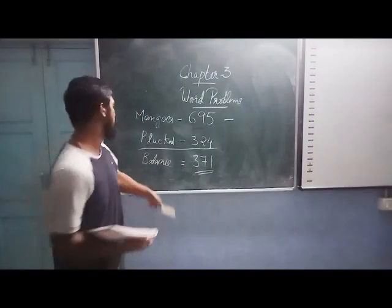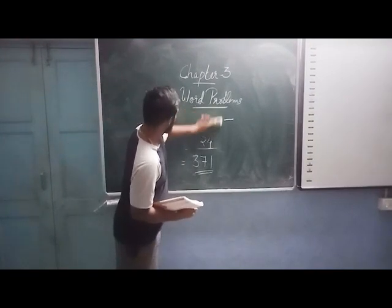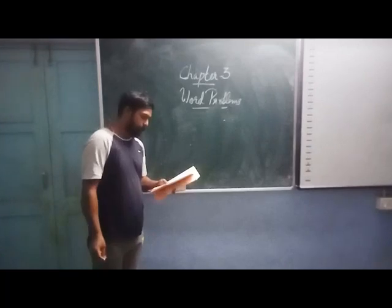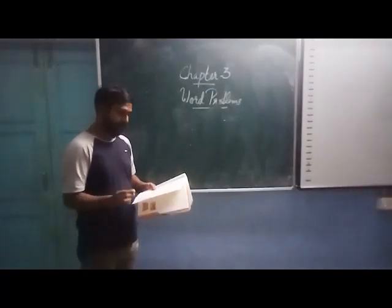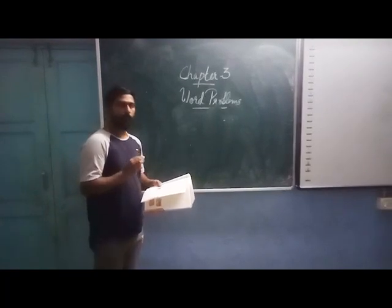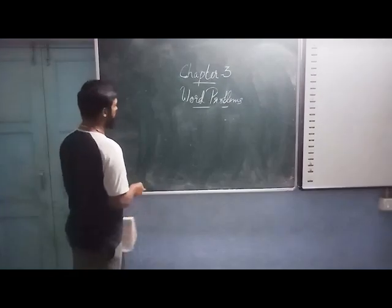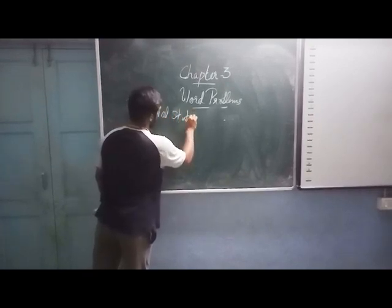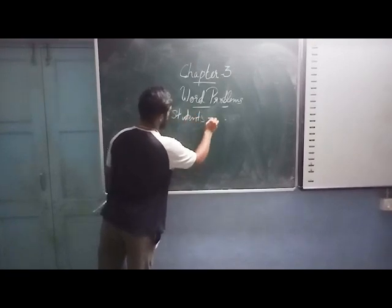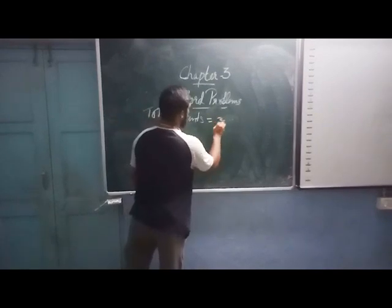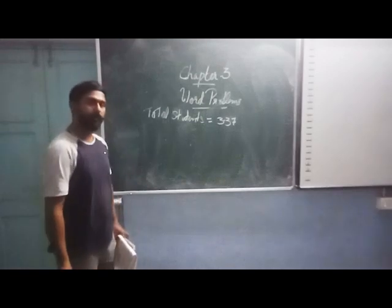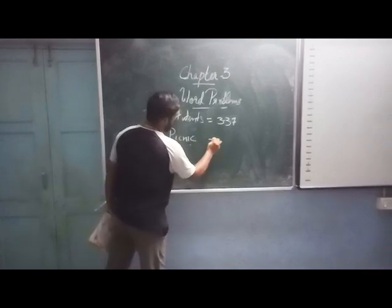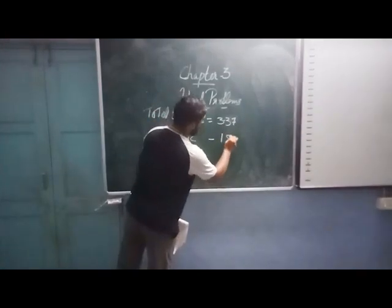Let us see another example — the second question. In a group of 337 students, 188 students went for a picnic. In this school, there were 337 total students. How many went for the picnic? 188 students went for the picnic.